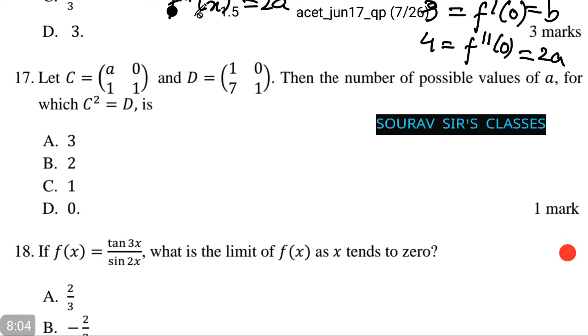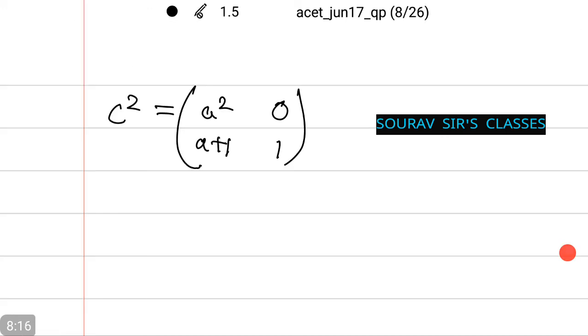Moving on, let c equal the given and d equal the given matrix. The number of possible values of a for which c squared equals d is. Thus c squared equals a squared, 0, a plus 1, 1.